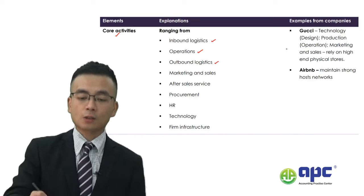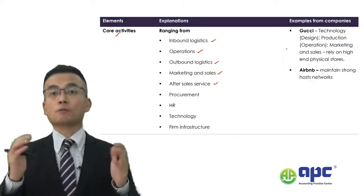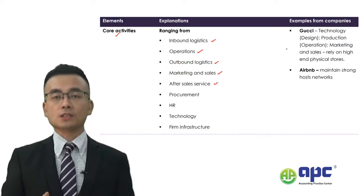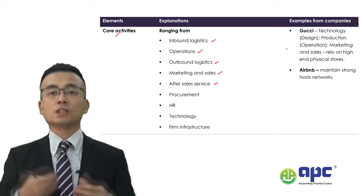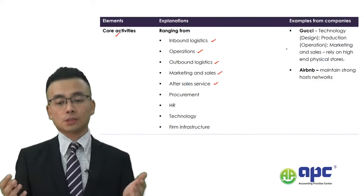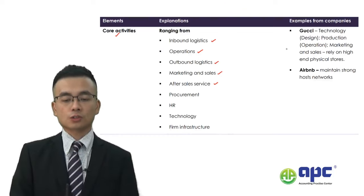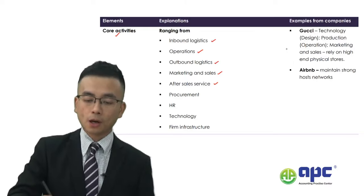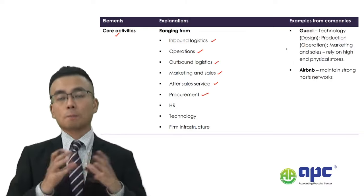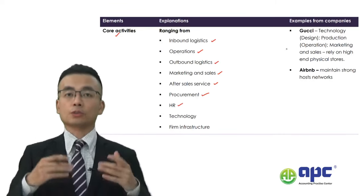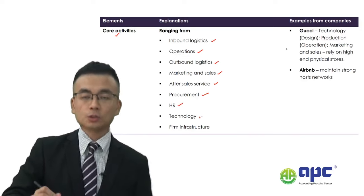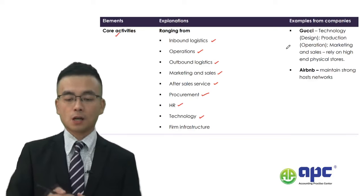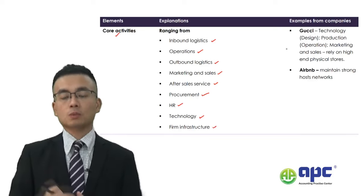How are you going to be marketing and selling your products? How are you going to be providing after-sales services? For example, for a tuition provider like APC, if you enrol in our ACCA course, we provide after-sales service in terms of tutor support and customer support — you can ask your tutor questions during your studies. How are you going to buy things — meaning procurement — whether you can buy things at a low price? How are you going to manage your people, which means the HR? How are you going to ensure enough resources in technology, particularly for research and development? And where does your money come from — which means the firm infrastructure?